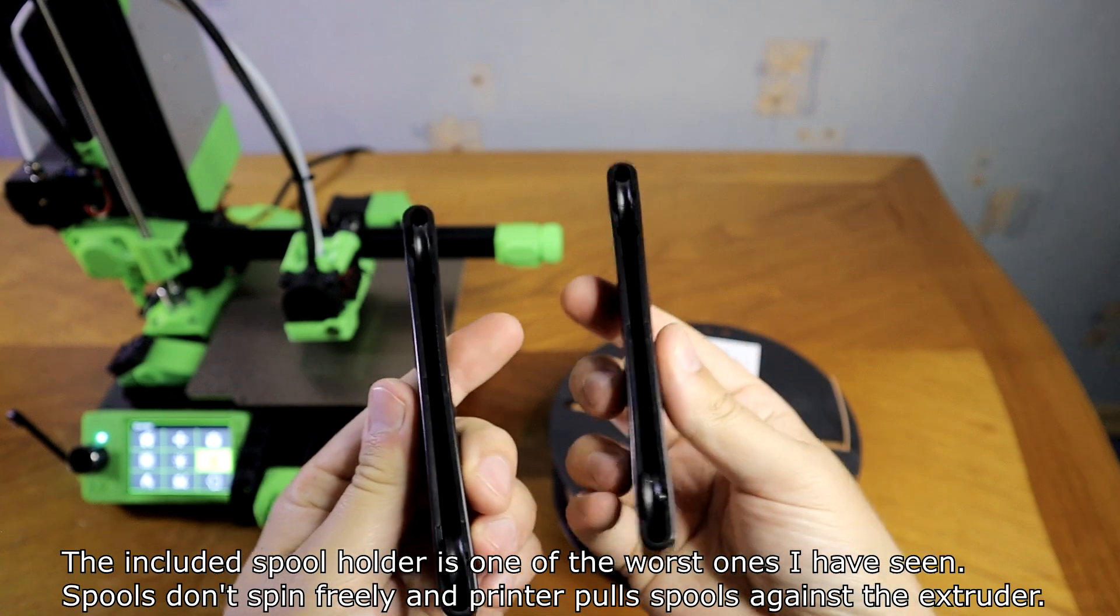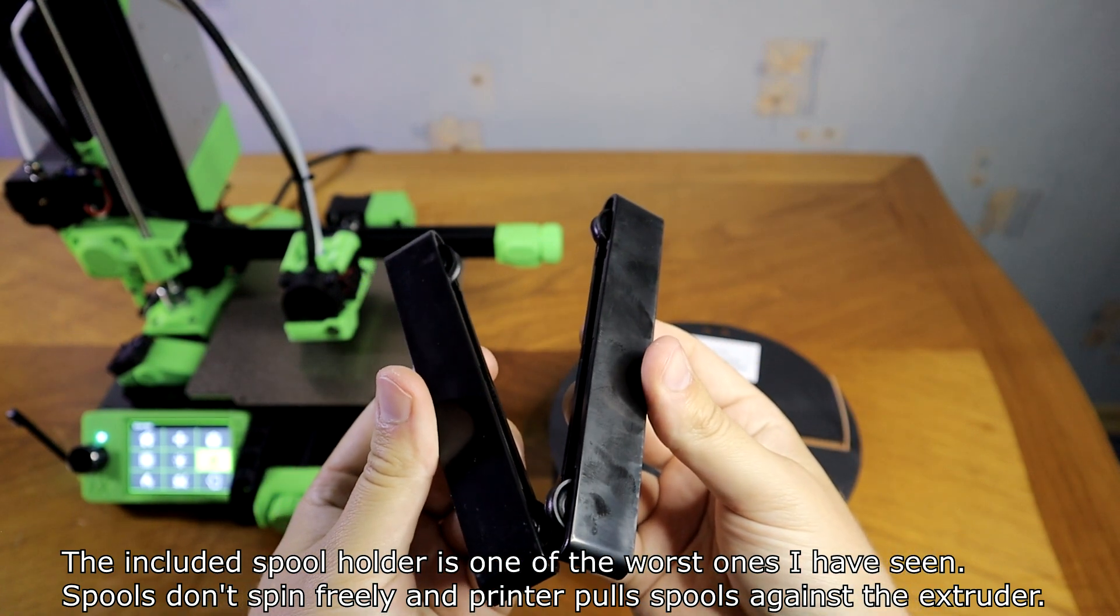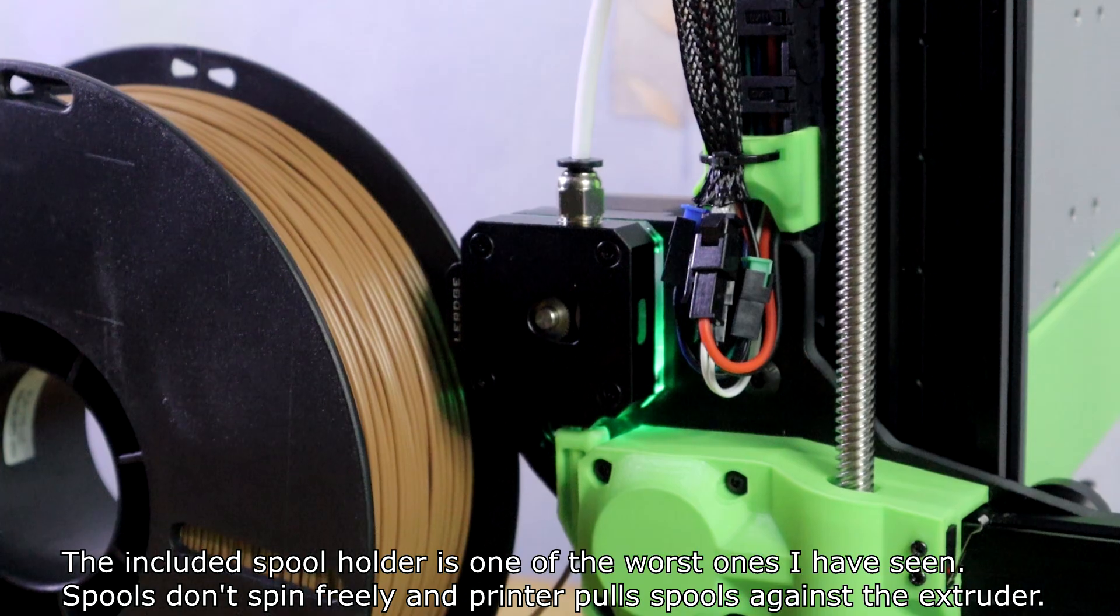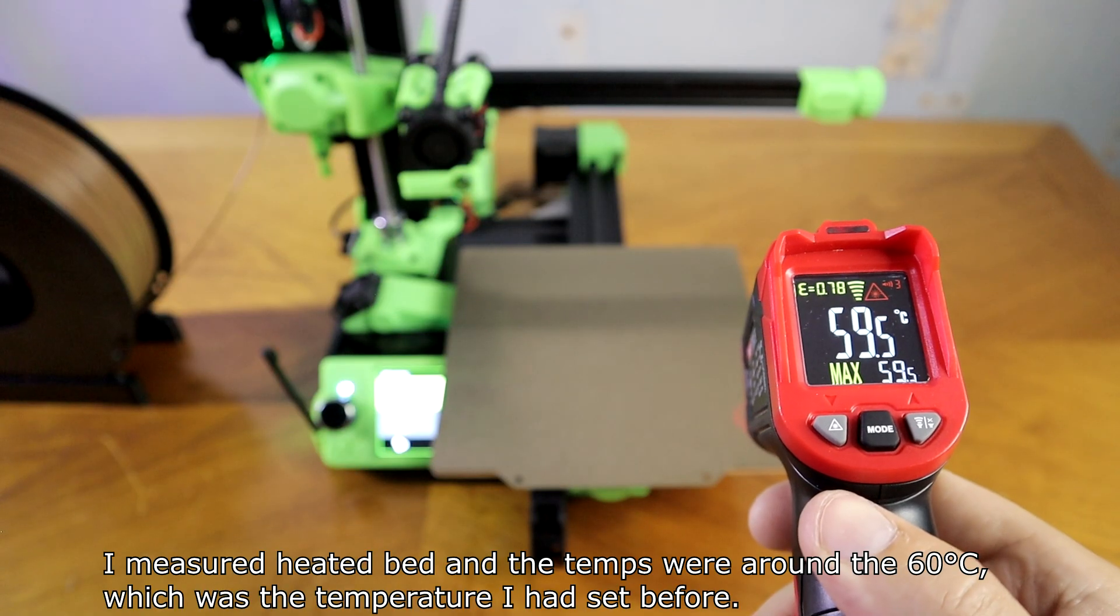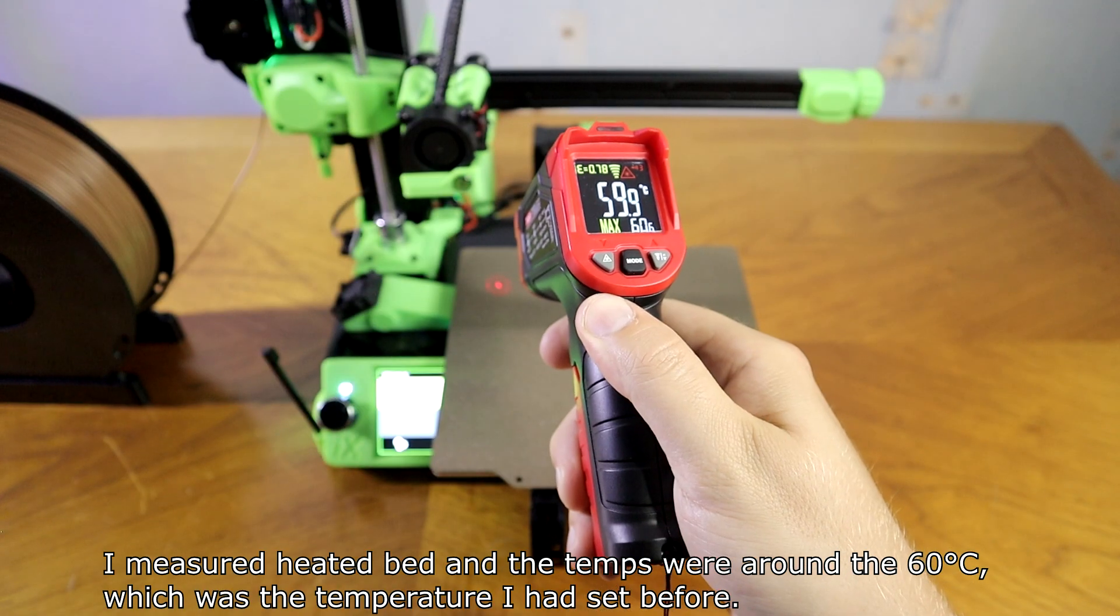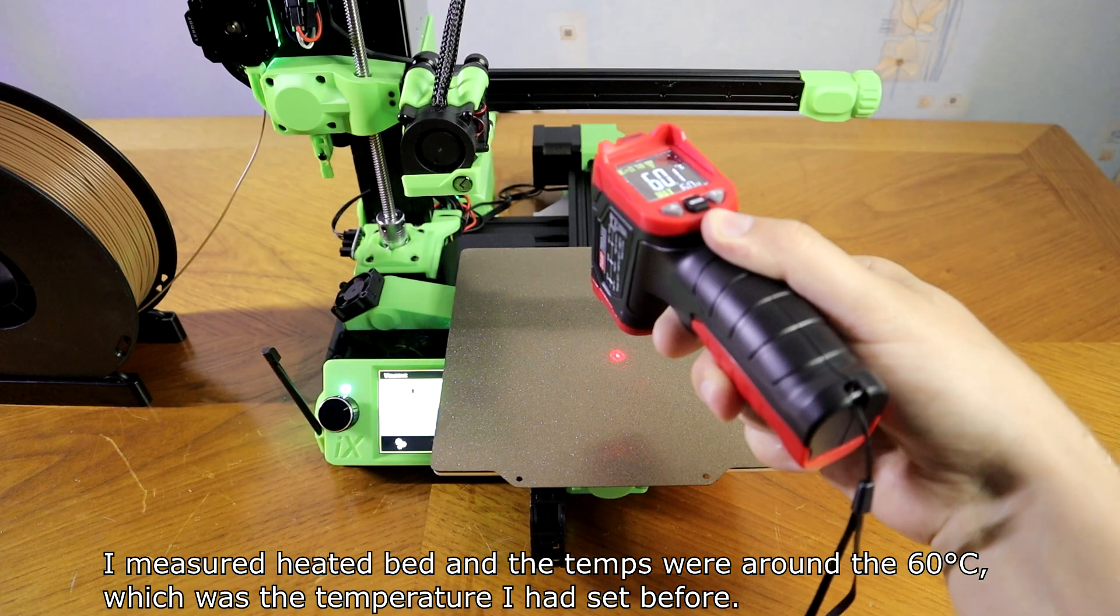The included spool holder is one of the worst ones I have seen. Spool doesn't spin freely and printer has to pull spool around to the extruder. I measured heating pad and the temps were around 60 degrees, which was the temperature I had set before.